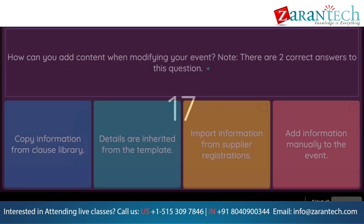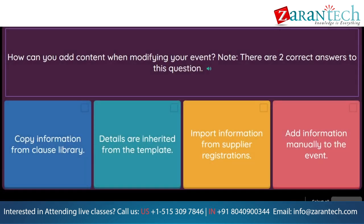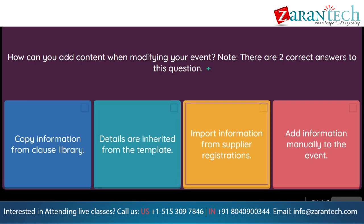Question: How can you add content when modifying your event? Note, there are 2 correct answers to this question. Option 1: copy information from clause library. Option 2: details are inherited from the template. Option 3: import information from supplier registrations. Option 4: add information manually to the event.